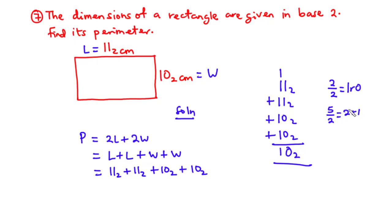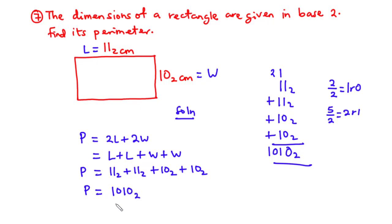We carry the 2. Since 2 is also greater than or equal to 2, we divide 2 by 2: 1 remainder 0. We write the remainder 0 and carry the 1, writing the 1 at the front. Therefore 11 base 2 plus 11 base 2 plus 10 base 2 plus 10 base 2 equals 1010 base 2. The perimeter of this rectangle is 1010 base 2 centimeters.